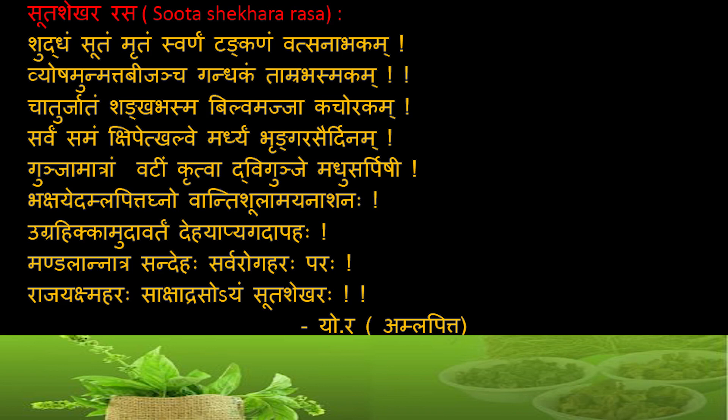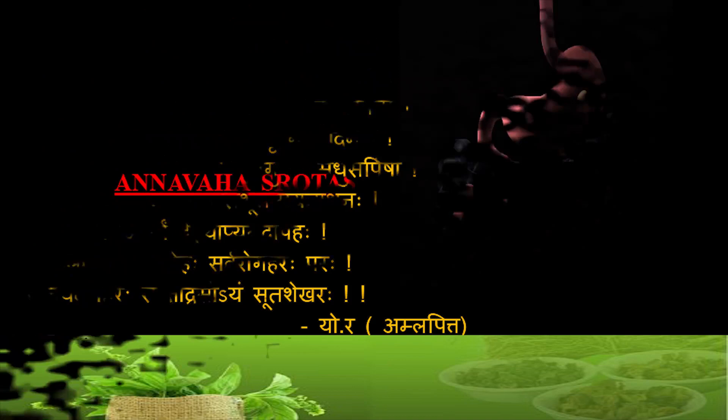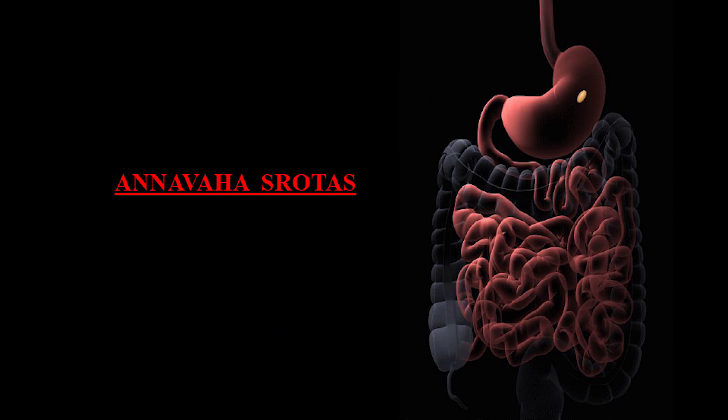Before starting the details of suta shekhar rasa, a short introduction about the annava srotas is needed. Whenever we speak about the annava srotas, the prime organ we consider is the koshta. As per Ayurveda, koshta is not only the gastrointestinal tract — it also includes accessory organs. The reference of koshtanga includes the liver, spleen, heart, lungs, and many other accessory organs, with varied opinions among different texts. Based on that, we will go for the enumeration of clinical indications of suta shekhar rasa.